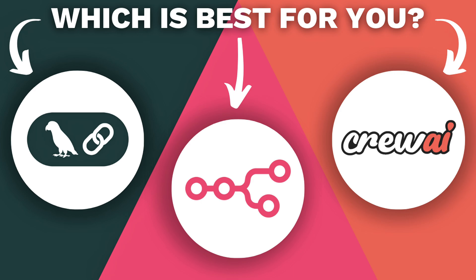So how do these tools compare? Langchain is for developers building custom AI apps with powerful integrations. N8n is perfect for no-code automation of workflows with a simple visual interface. And Crew AI is designed for developers creating AI teams to tackle complex tasks.